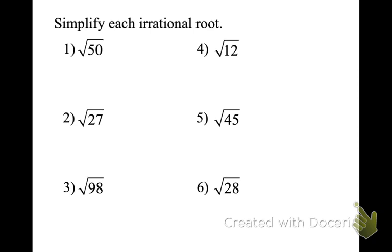Let's do one together: √50. I'm going to start by breaking it down by 2 — 25 times 2. So it's √25 × √2, and the root of 25 is 5. So √50 = 5√2, since 2 is not a perfect square.